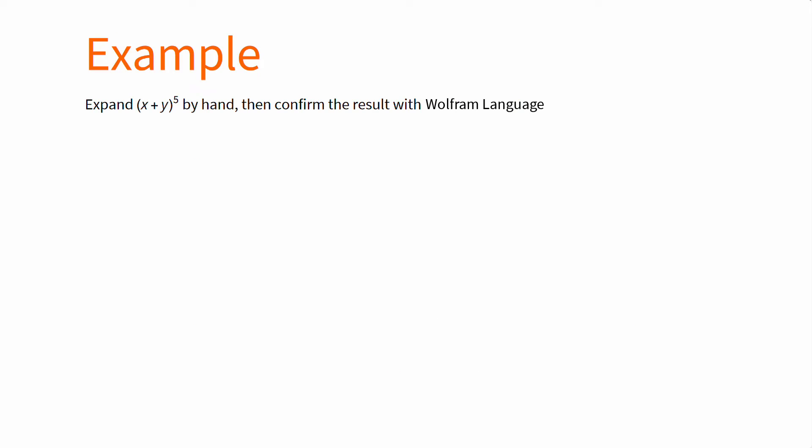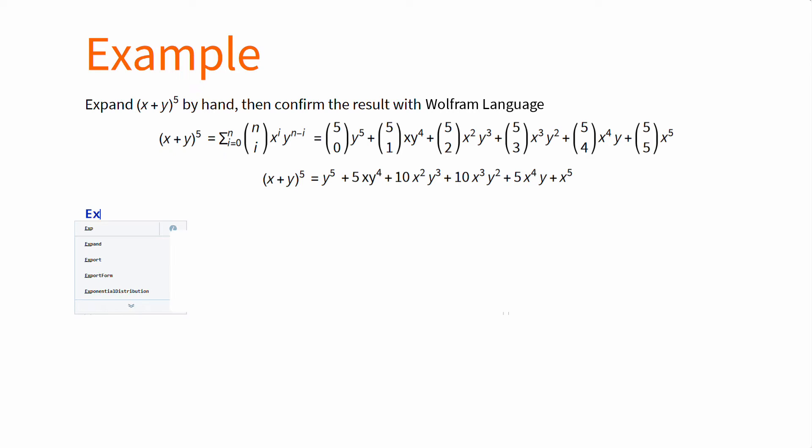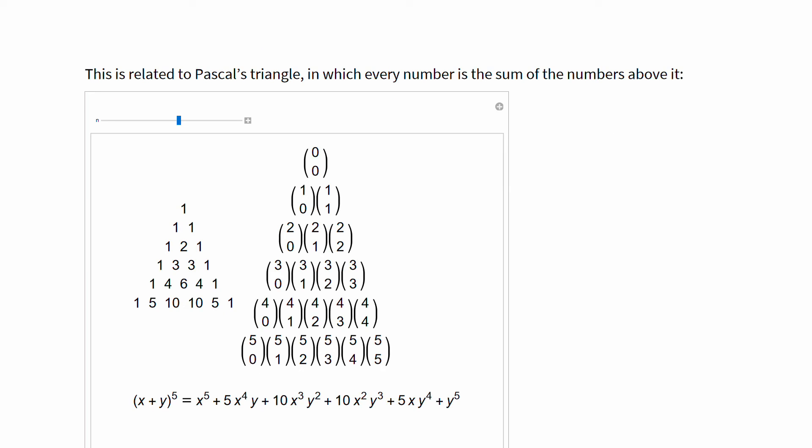For example, consider n is equal to 5. Then we can use the binomial theorem and we end up with all the possible coefficients, which is actually true if you expand the entire thing. As a side note, binomial coefficients can be expressed as a recursive sum starting at 1, and this is called Pascal's triangle.